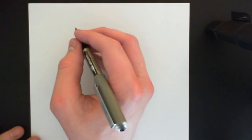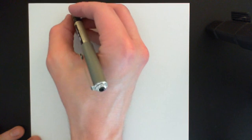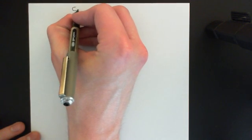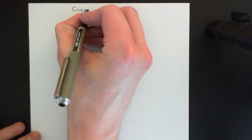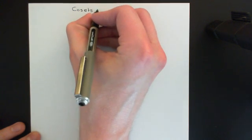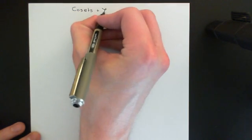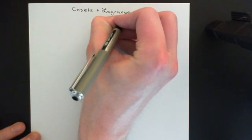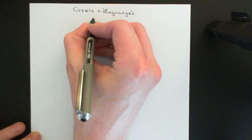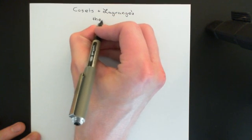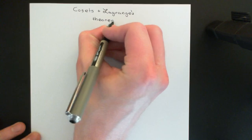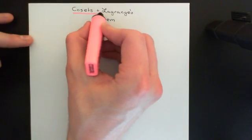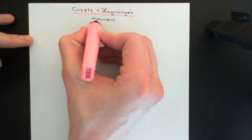Welcome to this next video in the playlist on group theory. In this video we're going to discuss the concept of a coset, and we're also going to discuss a really important theorem in group theory called Lagrange's theorem. Our study of what cosets are will lead us on to understanding Lagrange's theorem, so this video is entitled Cosets and Lagrange's Theorem.